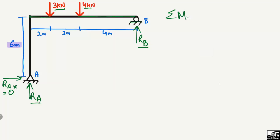To start our calculation, we use the equilibrium equation: summation of moments at any point equals zero. We take the summation of moments at point B equal to zero. The clockwise moment direction is taken as positive and the anti-clockwise moment direction is taken as negative.